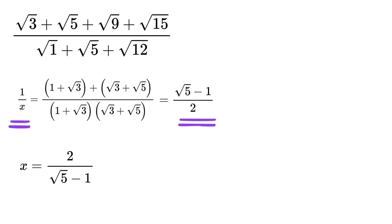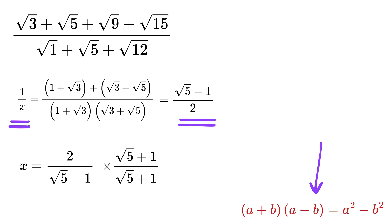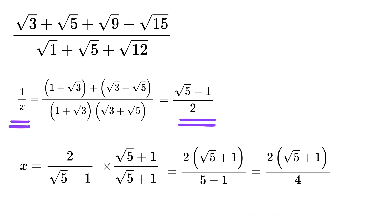So x equals 2 over the quantity square root of 5 minus 1. We rationalize this one last time by multiplying both numerator and denominator by square root of 5 plus 1. Using the identity again, we get the denominator as 5 minus 1, or 4. This cancels with 4, and we get x equals 1 plus square root of 5, divided by 2.